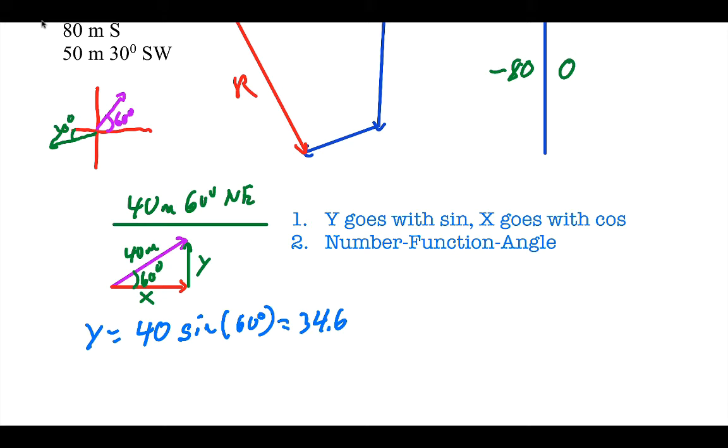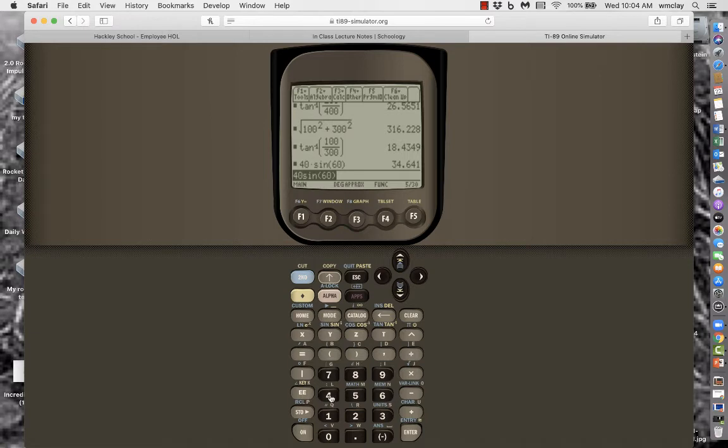The x component follows the same rule. X goes with cosine, number, function, angle. The number is still 40, the function is cosine, and the angle is 60. For the x component, I have 40, there's cosine which is a second, 60 degrees, close parentheses, and that gives me 20. And so that's how that works out on the calculator.